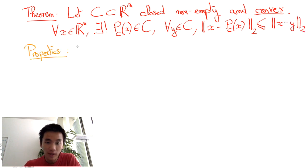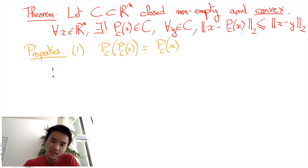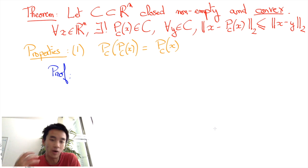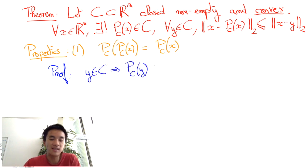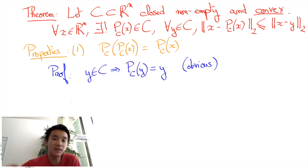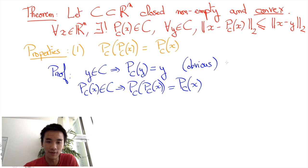First, it really is a projection, in the sense that the projection of the projection of X is going to be the projection of X. This is pretty obvious when you think about it. If X is already in C, then the minimizer of the distance between X and a point of C is X itself. Thus, if X is in C, PC of X is equal to X. But PC of X is already in C, thus PC of PC of X is necessarily going to be equal to PC of X.